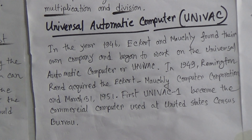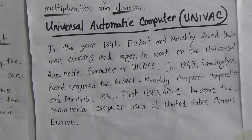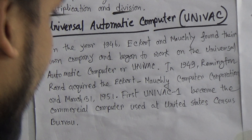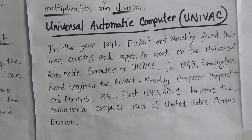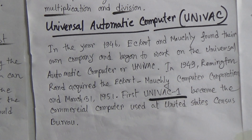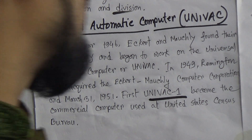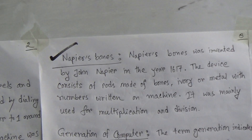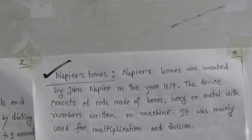Universal Automatic Computer — UNIVAC. In the year 1946, Eckert and Mauchly founded their own company and began to work on the Universal Automatic Computer, or UNIVAC. In 1949, Remington Rand acquired the Eckert-Mauchly Computer Corporation. On March 31, 1951, the first UNIVAC became the first commercial computer used at the United States Census Bureau. That means UNIVAC became the first commercial computer.